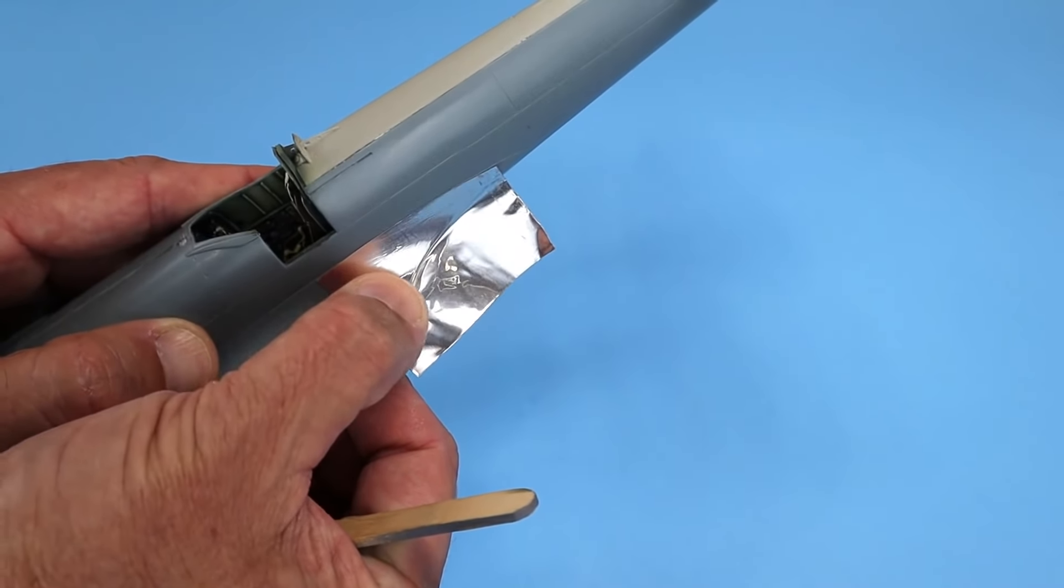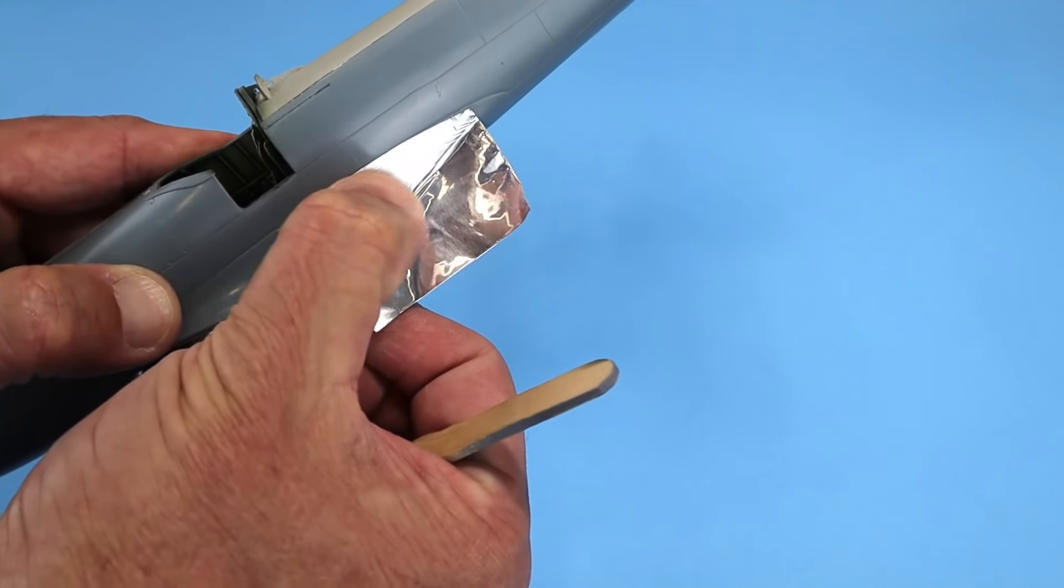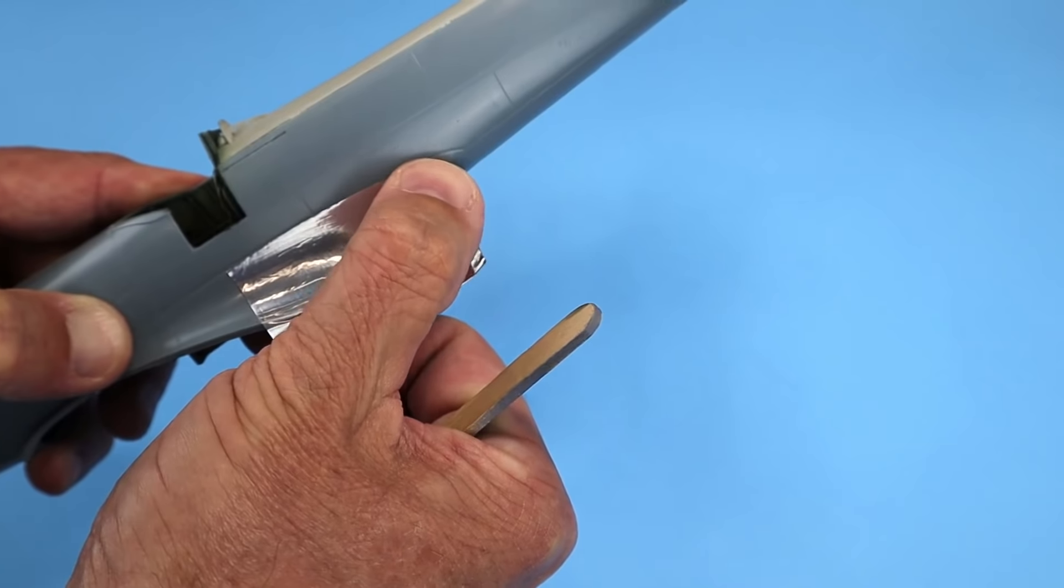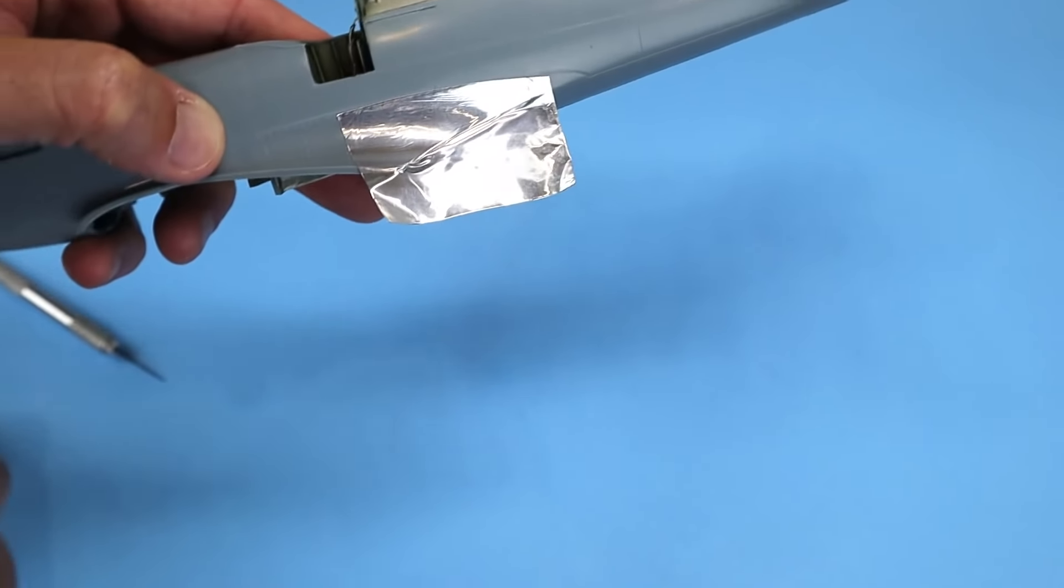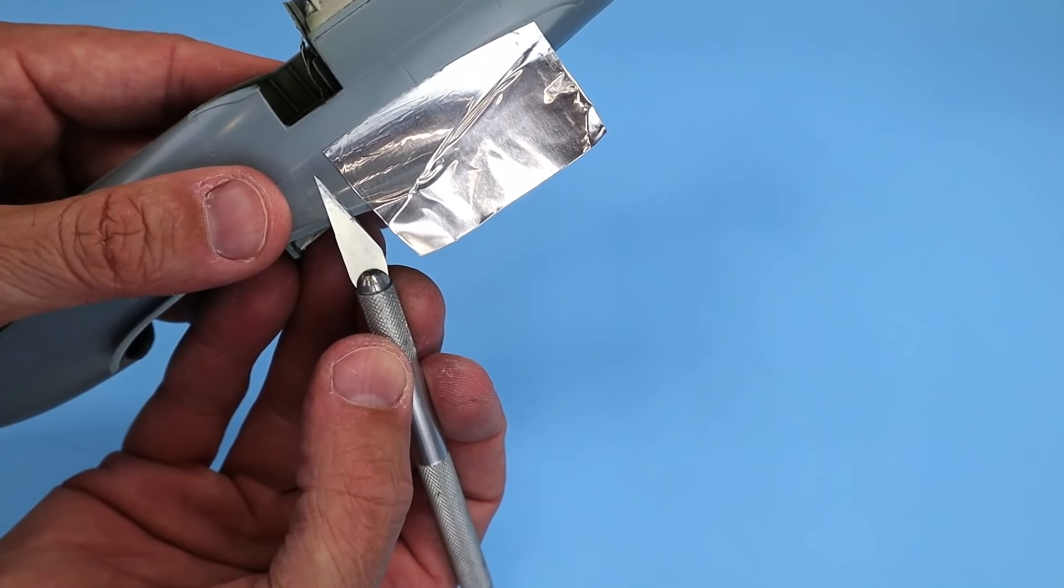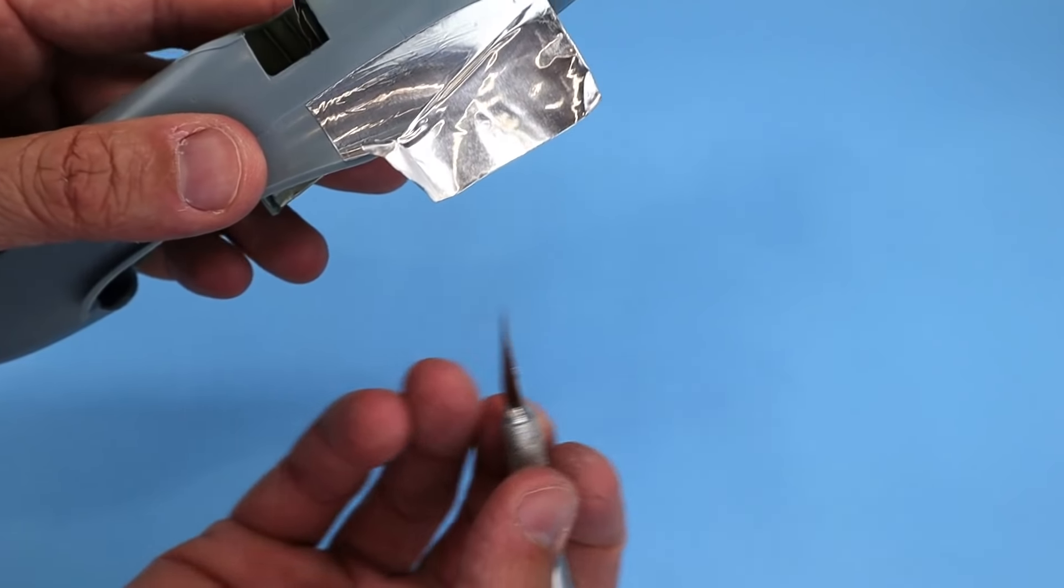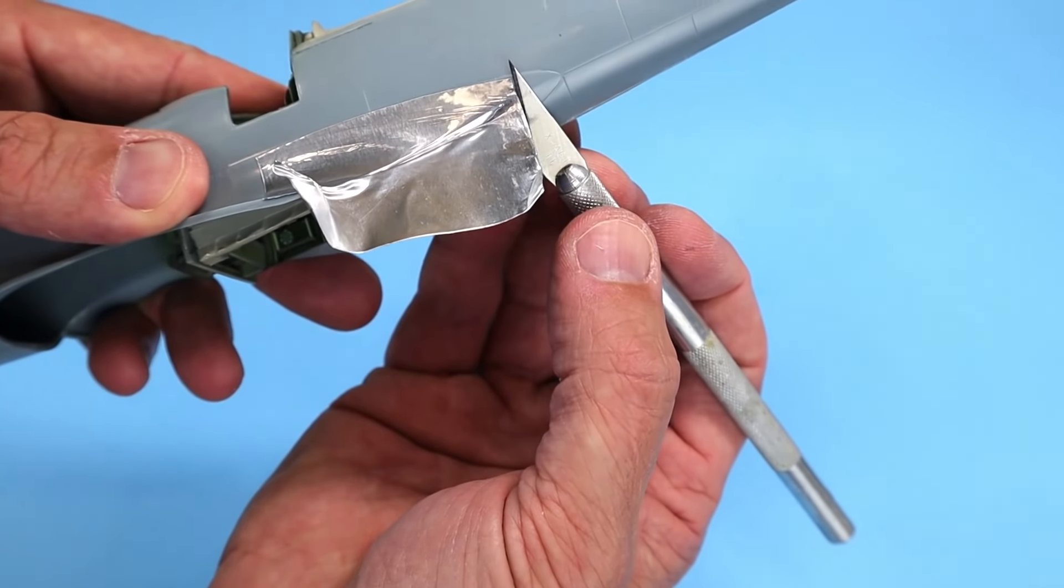So once you have it down, you can just take your hobby knife and easily cut off the excess like so.